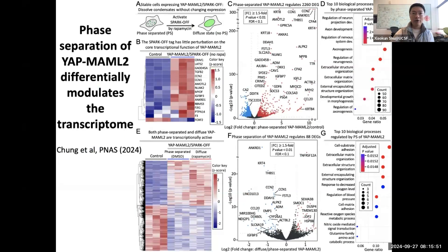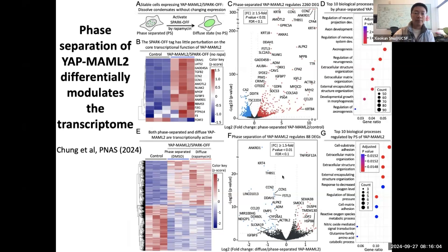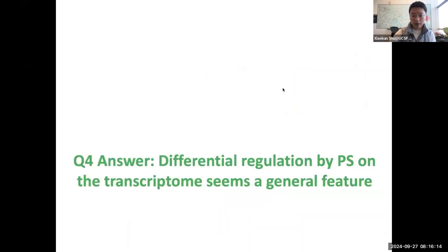By comparing phase-separated versus non-phase-separated samples, we found that phase separation of this YAP fusion oncoprotein regulates about 90 genes among over 2,000 genes regulated by the fusion oncoprotein. So the answer to the fourth question is that this differential regulation of the transcriptome by phase separation appears to be a general feature.